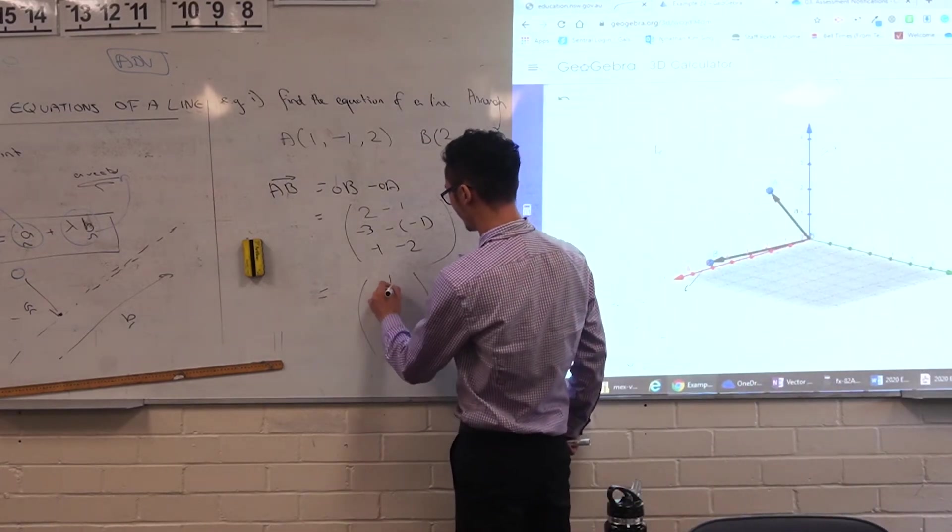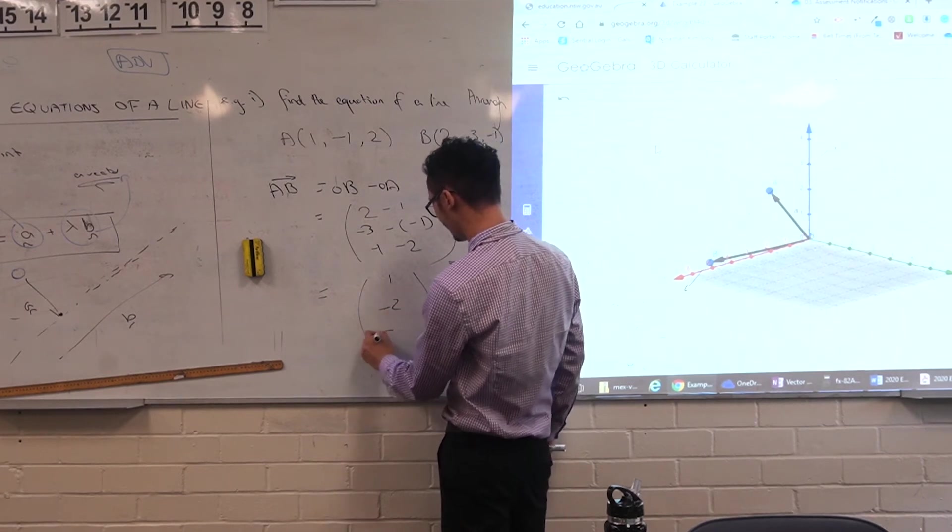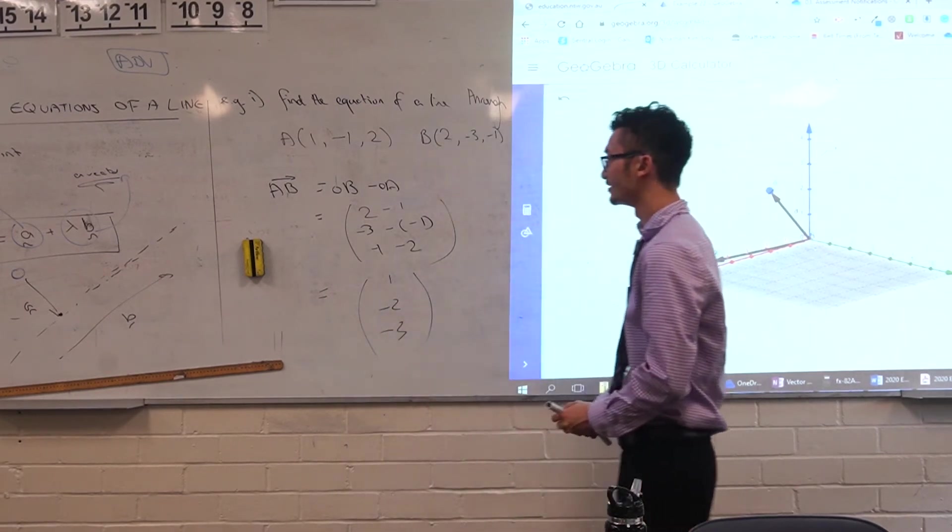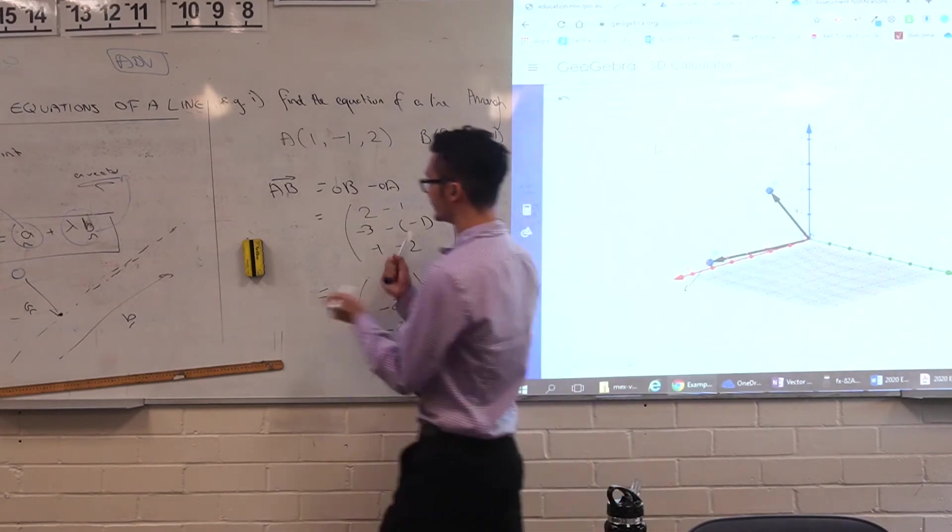So 1 minus 2 minus 3, cool. So that's our direction vector now. That's our direction.